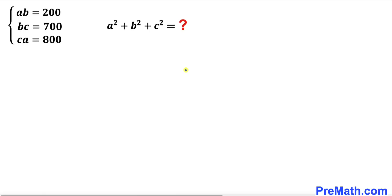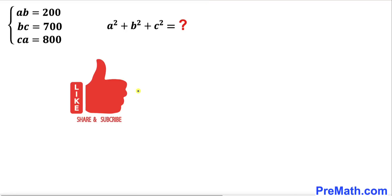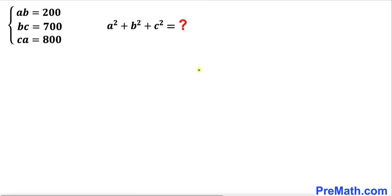Welcome to Pre-Math. In this video we have a system of equations: ab = 200, b times c = 700, and c times a = 800. We are going to find the value of a² + b² + c². Please don't forget to give a thumbs up and subscribe. Let's get started.